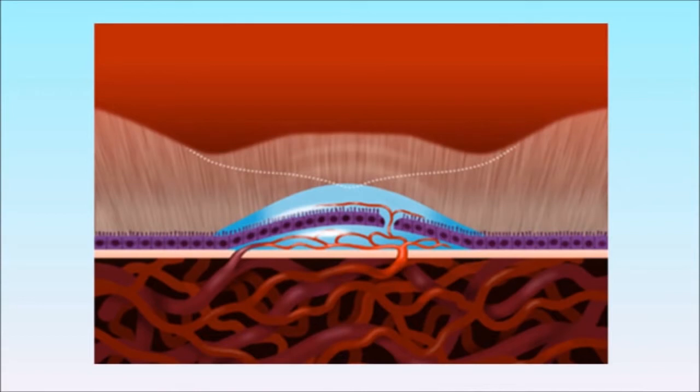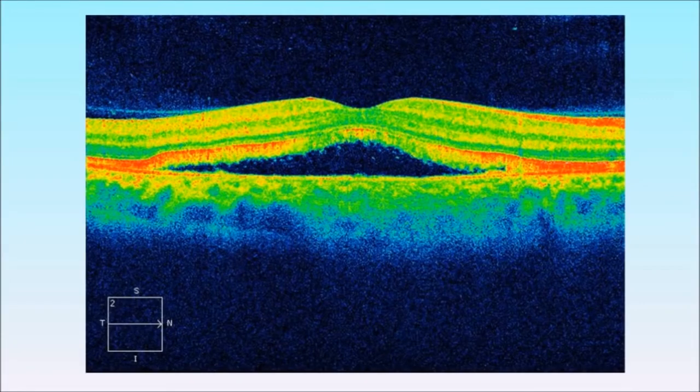In wet macular degeneration, unwanted blood vessels grow into the retina from the deeper choroidal layers. These unwanted blood vessels can hemorrhage and leak fluid into the retina. This can result in massive visual loss if left untreated.